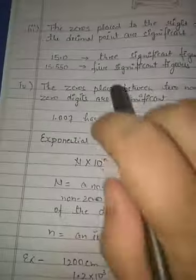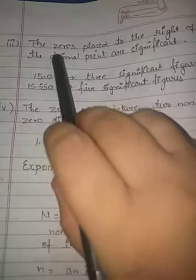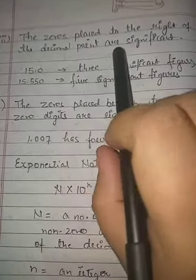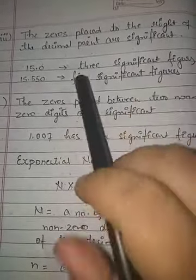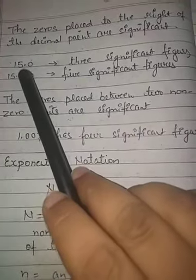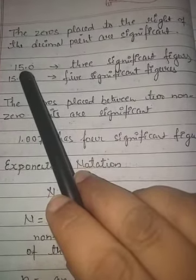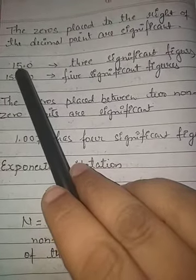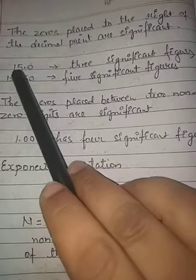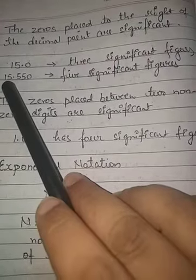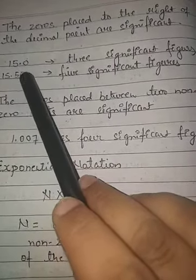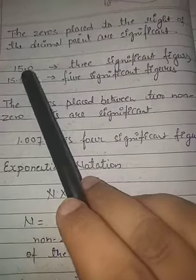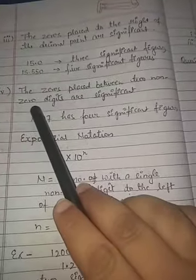The third rule: zeros placed to the right of the decimal point are significant — all zeros to the right of the decimal point are significant (not including the decimal point itself). For example, 15.0 has three significant figures, and 15.550 has five significant figures.